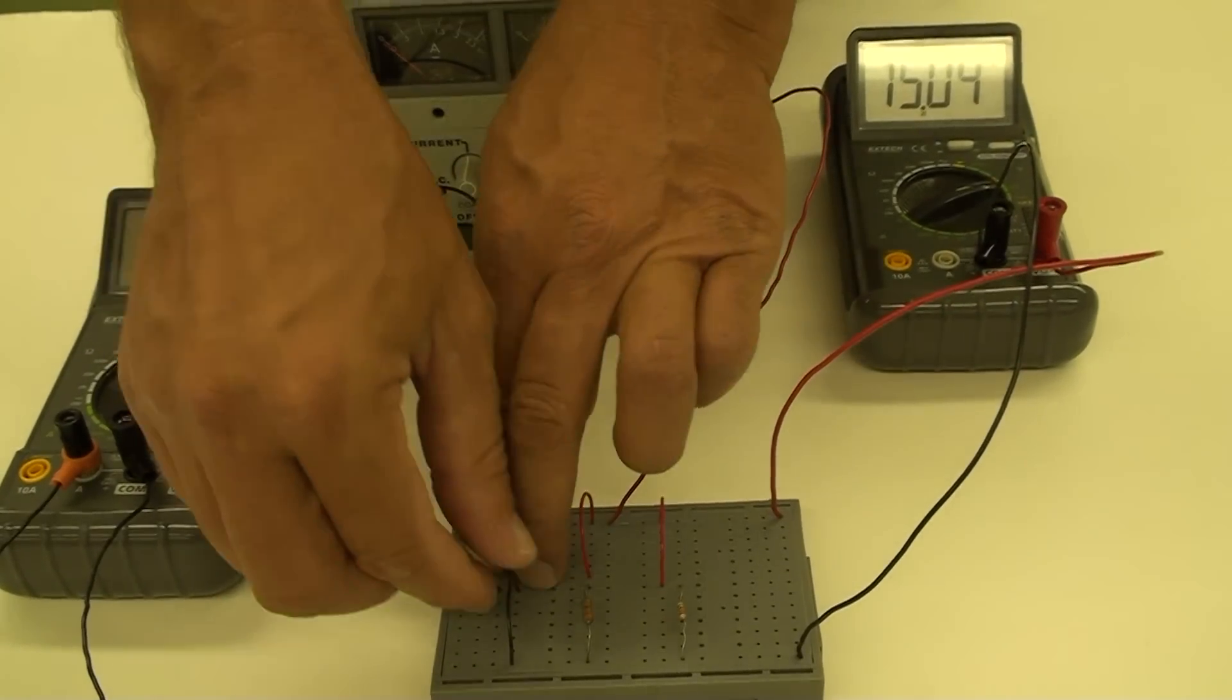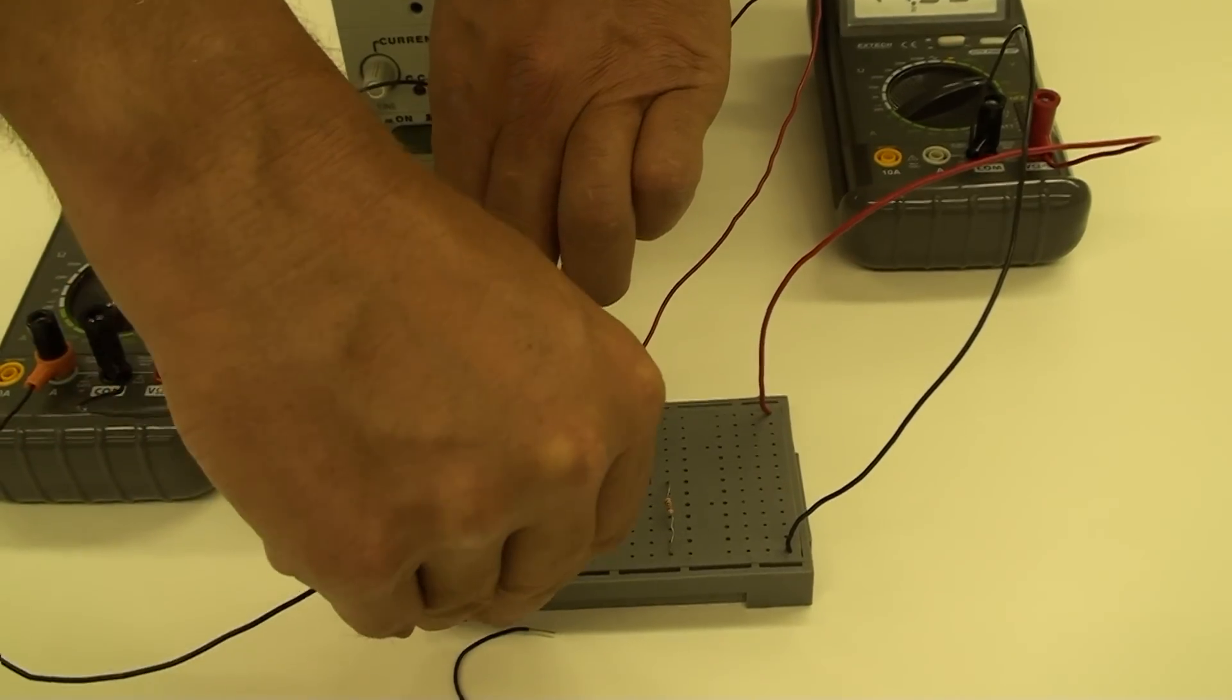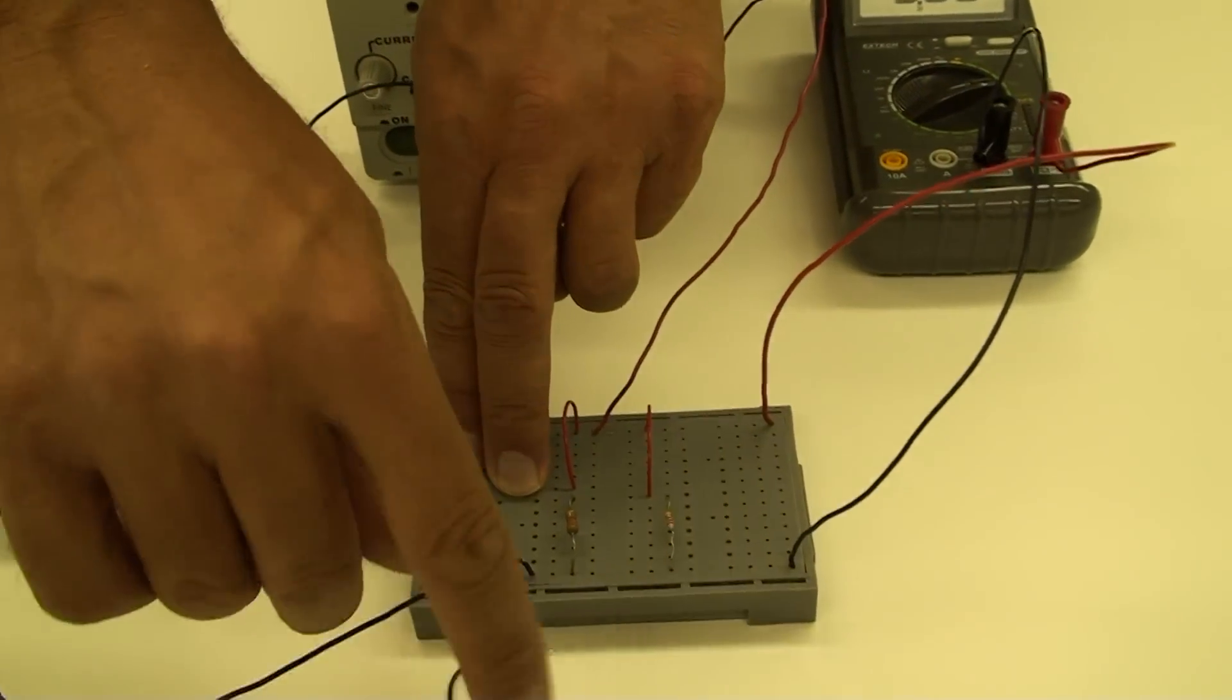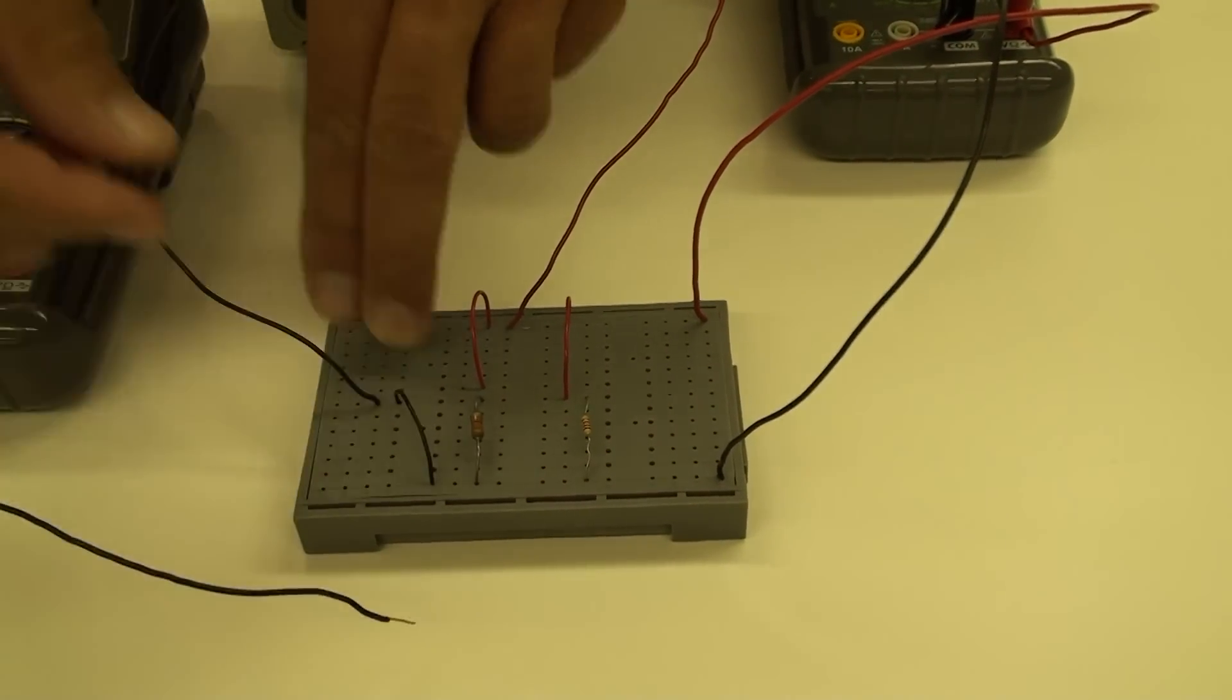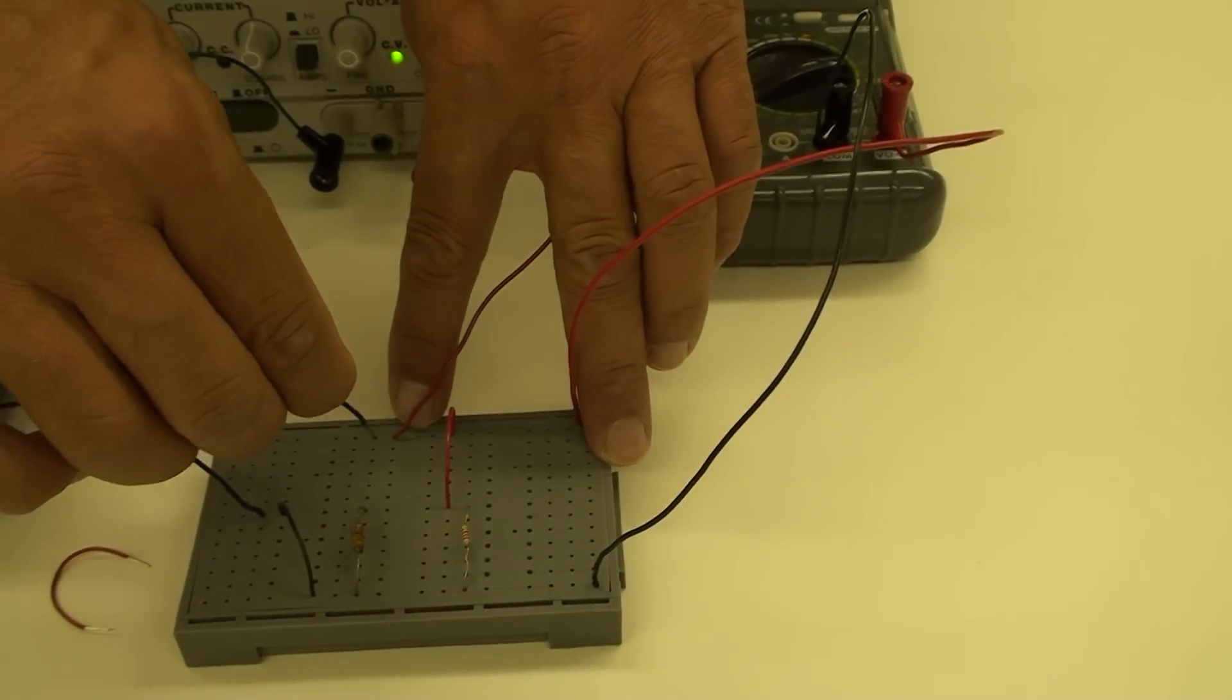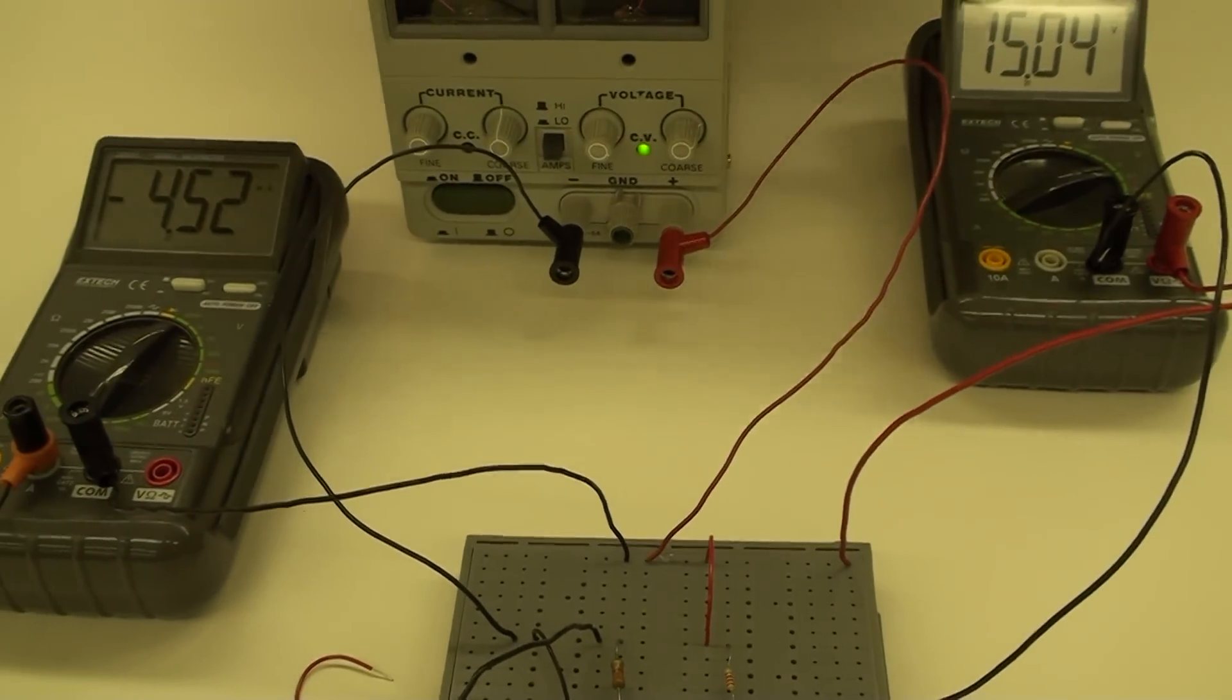These current measurements are made in practice by replacing each jumper in turn by the ammeter. Replacing the black jumper allows measurement of I, the total current through the entire circuit. Replacing the first red jumper allows measurement of I1, and replacing the second red jumper allows I2 to be measured.